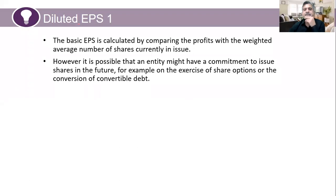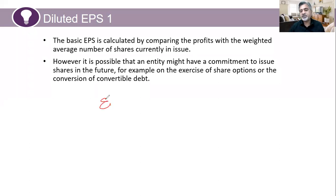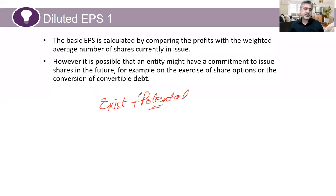With diluted EPS, the number of shares you calculate will include not only the existing shares but also the potential shares. Potential shares are those which have not been issued yet, but you have made a promise to issue in the future — for example, shares under IFRS 2 share-based payments, convertible bonds, etc.